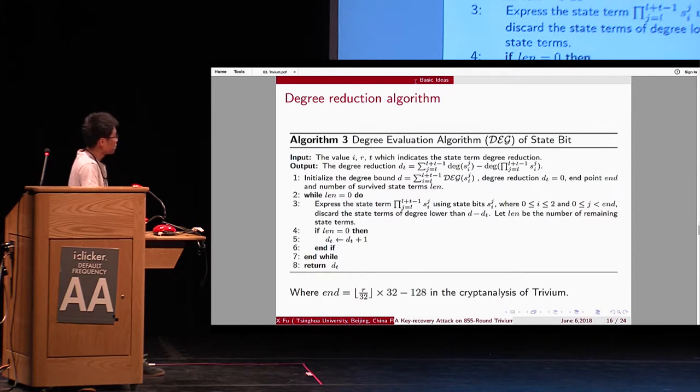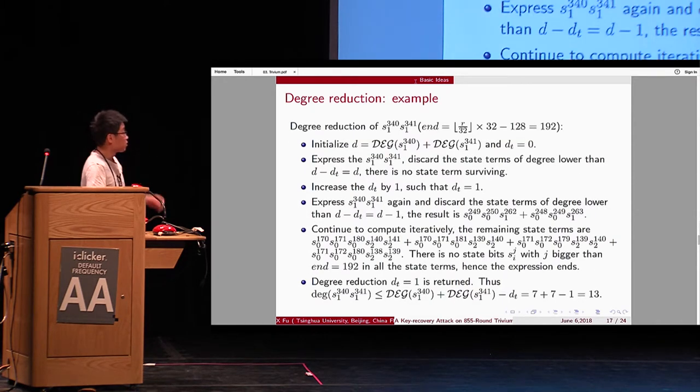So, this is a reduction algorithm. We use an example to explain this. And in Trivium, there are many state terms in this form. The numbers are nearby. So, we decompose these terms. There are two internal state bits that occur twice in a term. So, when we evaluate the degree of this term, the double appeared state term should be removed by one state term.